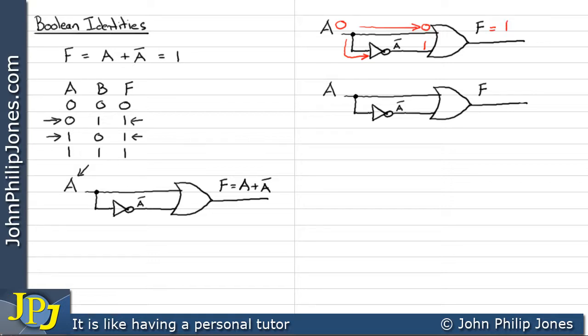Now the other possible value for A is it can be a one. Now that one would come to the input of this OR gate here and the one would also come down here to the NOT gate.